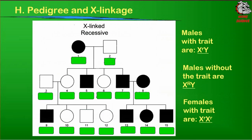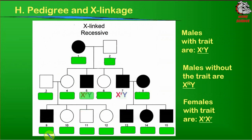In the next example, we apply the same rules to an unspecified X-linked recessive trait — let's say hemophilia. First, identify all the males, since males are easy to identify because their genotype matches their phenotype — they only inherit one X chromosome. Males with the trait are X little r, Y. Individuals number 7, 5, 9, 13, and 15 all have the trait, so they're all X little r, Y.